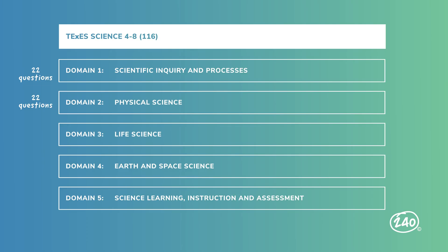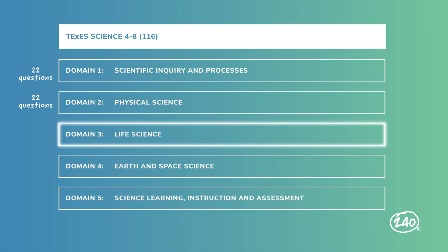Now let's head over to domain three, which is all about life science — those plants are coming back to haunt me. This category covers another 22 questions on the exam. The life science domain covers a lot — we're talking several college courses worth of material here — but don't worry, I've got you. You're going to want to know about the structure and function of living things, and heredity and evolution.